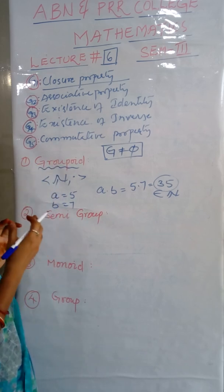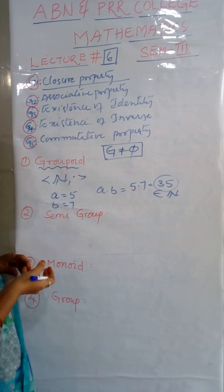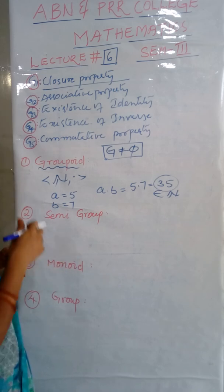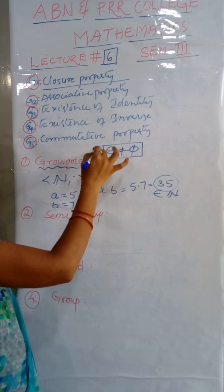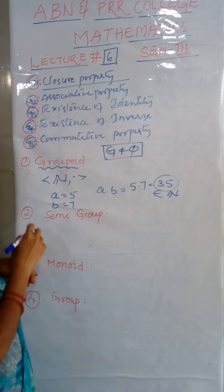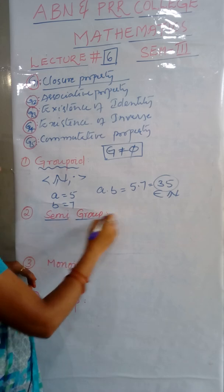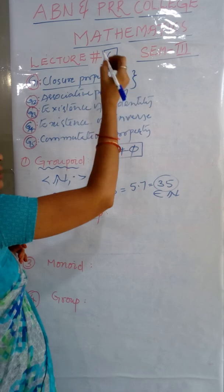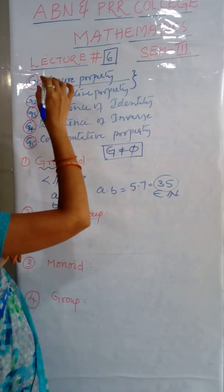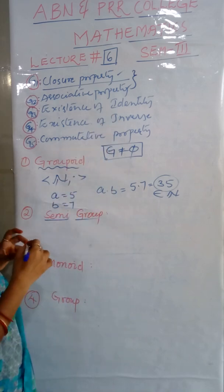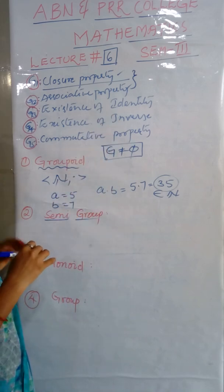Some more examples are Z, plus, Q, dot, like that. A non-empty set holding the first property is called groupoid. Next, second one, what is a semigroup? A non-empty set with the two properties, closure property and associative property, is called a semigroup.